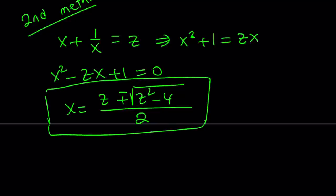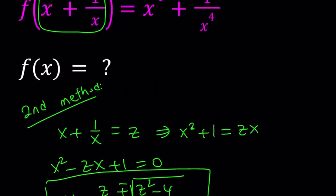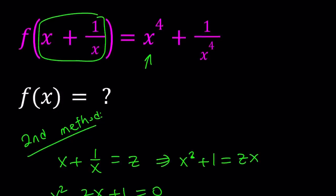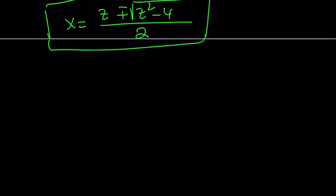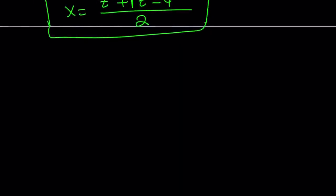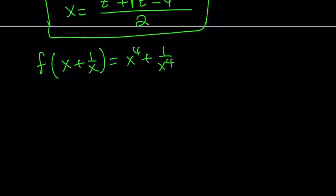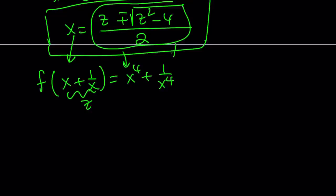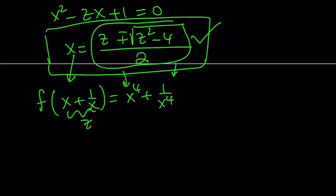Now what am I going to do with this? Since I have something in terms of x on the right-hand side, I can substitute what I found for x. Let me remind you what the original problem was asking for. We're trying to find f of x, and now we have an expression for x which we got by setting x plus 1 over x equal to z. Now let's plug this in for x in two places, so I need to evaluate this expression to the fourth power.